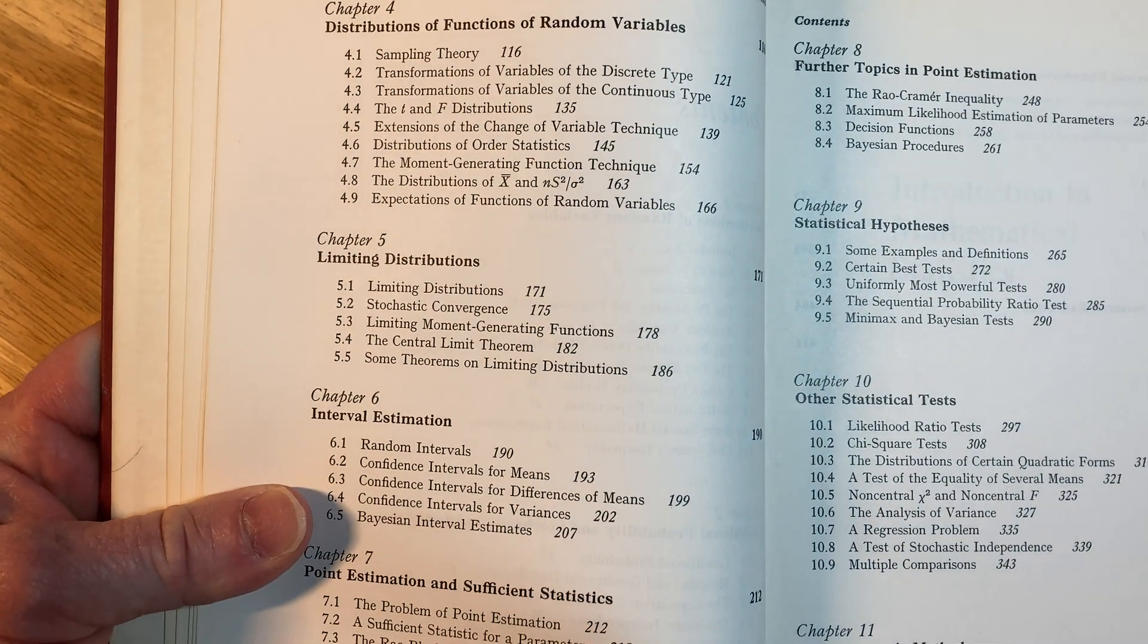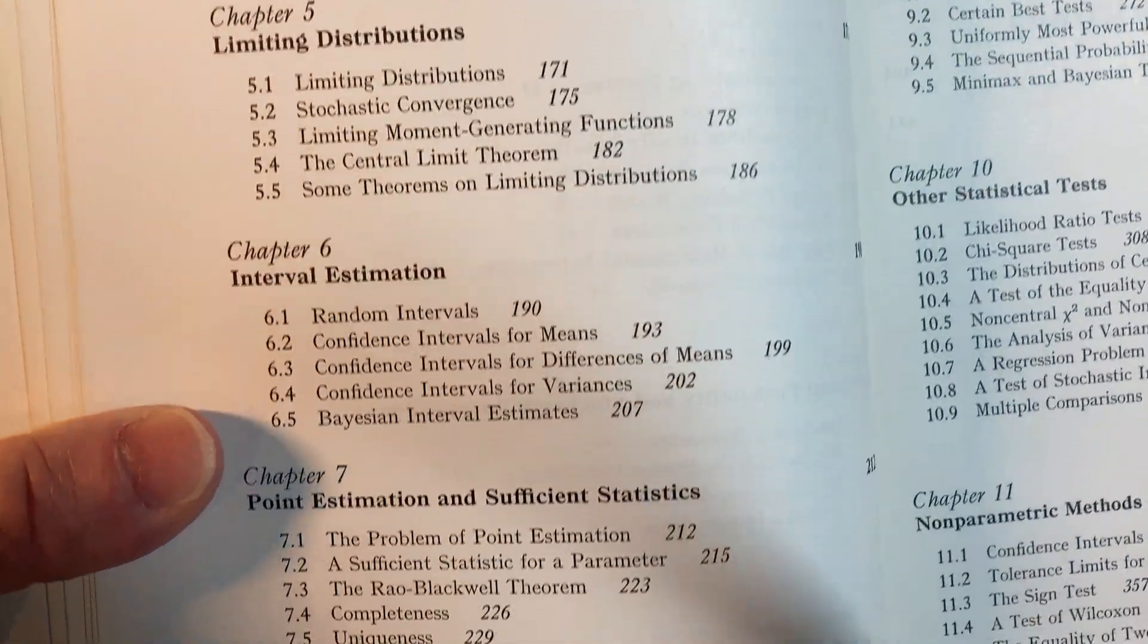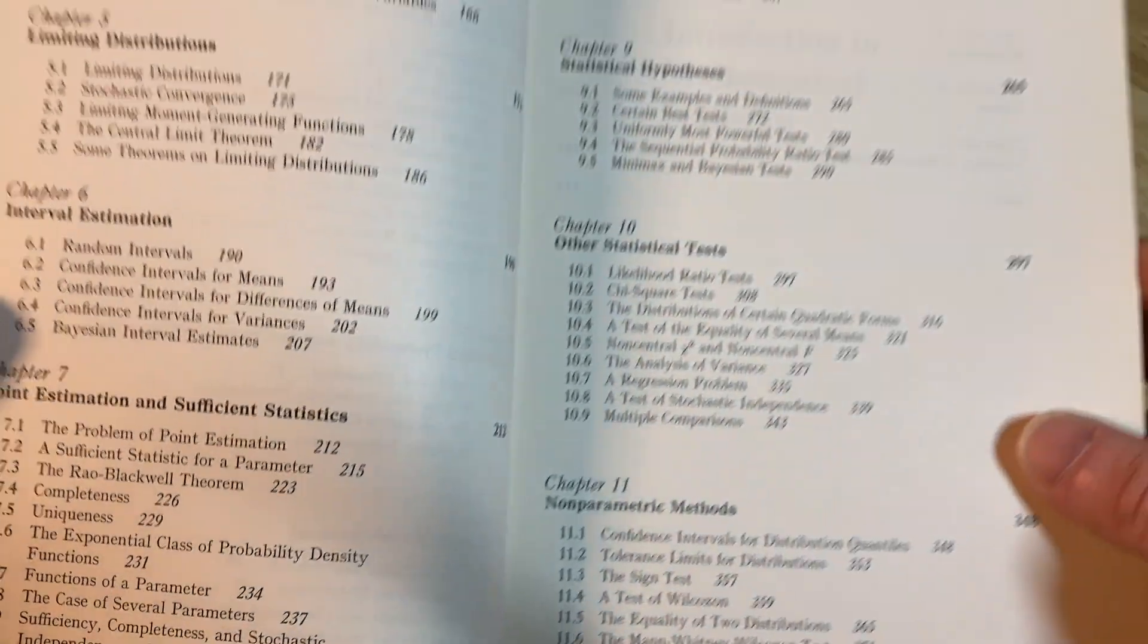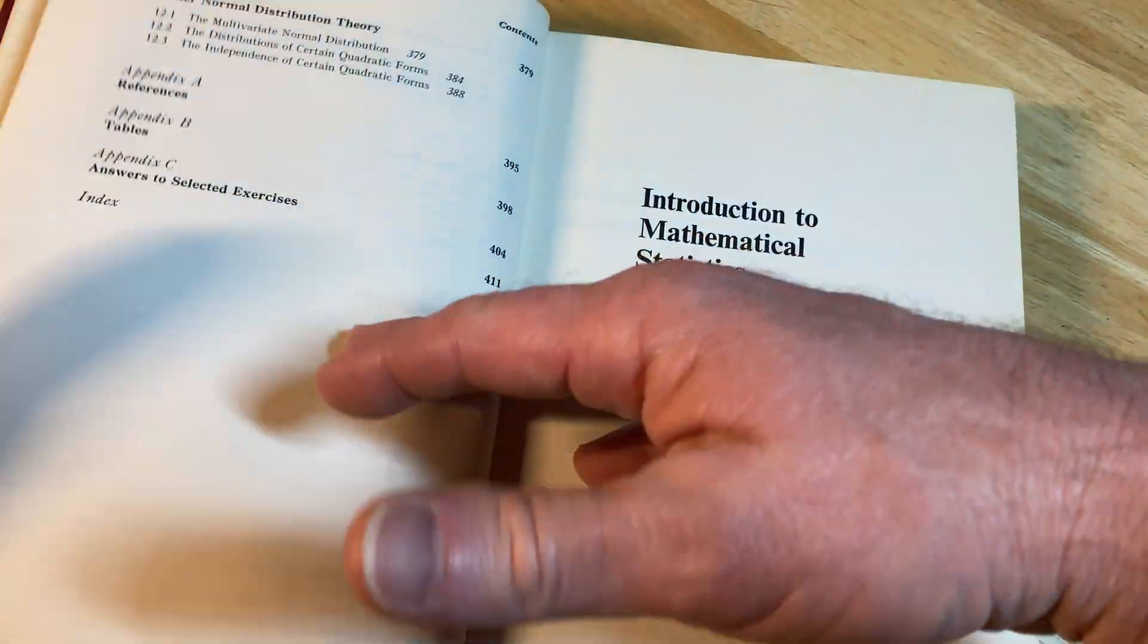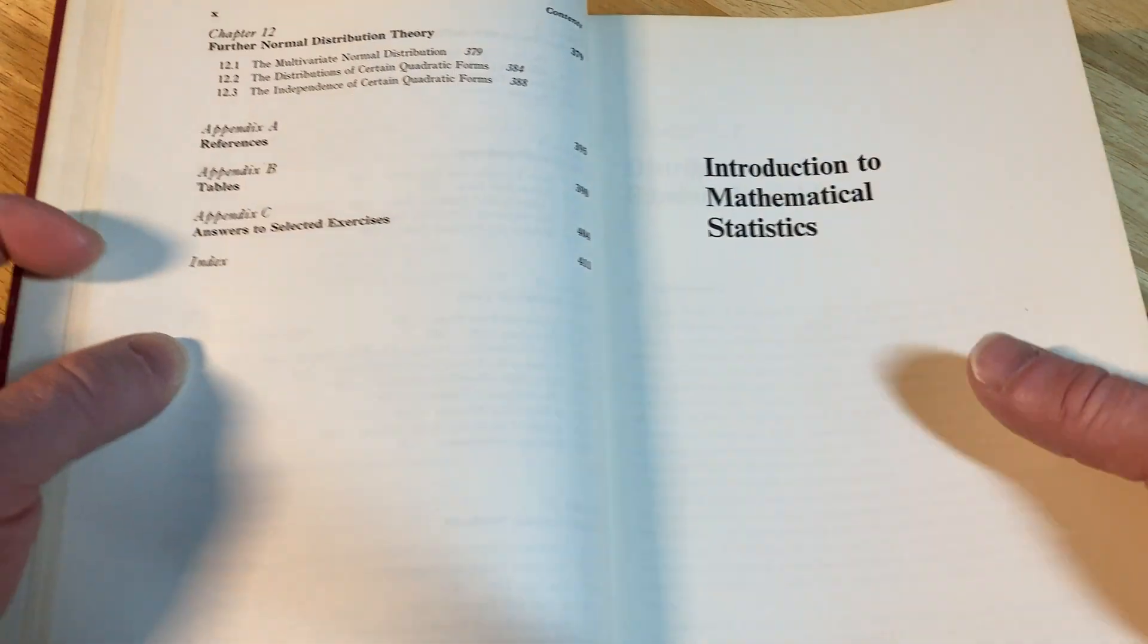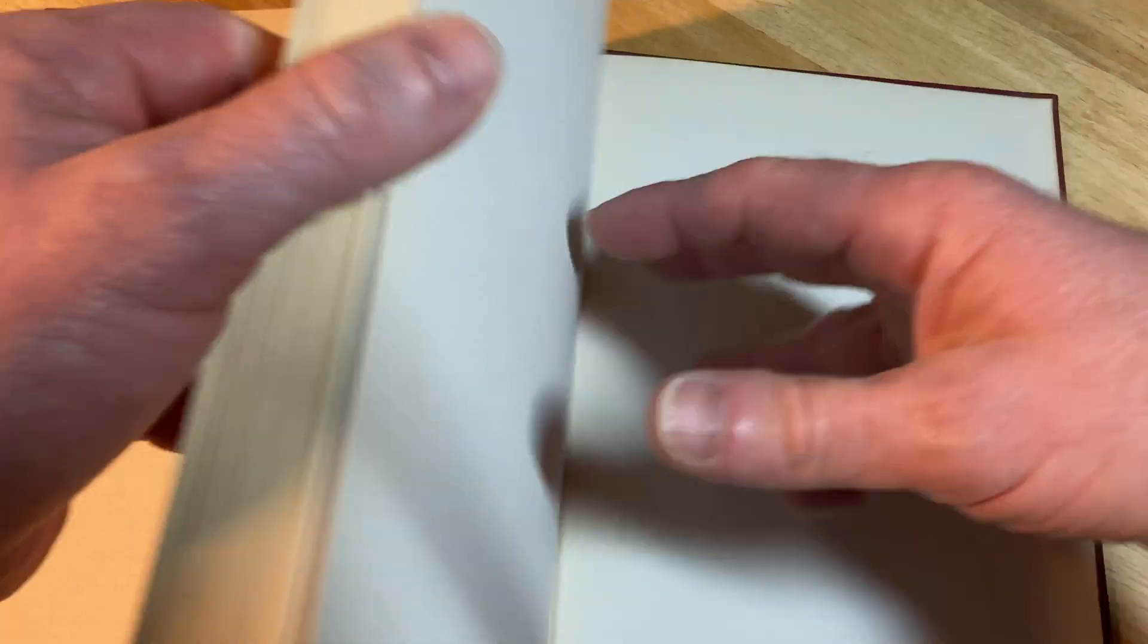There's just so much. Look at all of this. Tons of mathematics. It's got hypothesis testing. And then it has answers to selected exercises, page 404. Let's go straight to that.